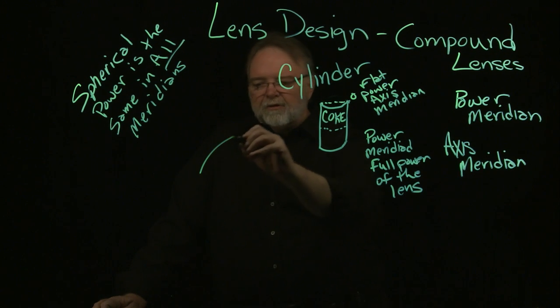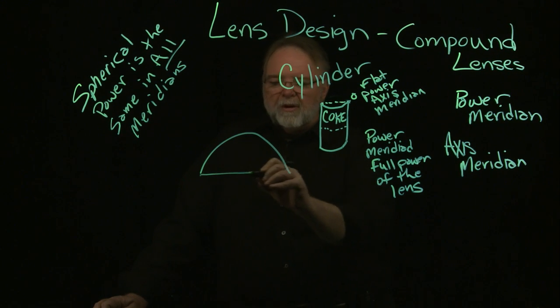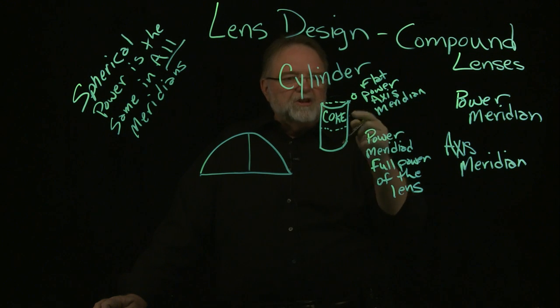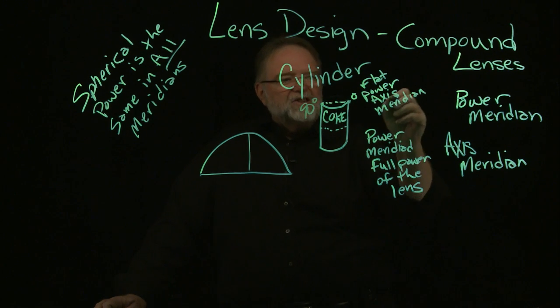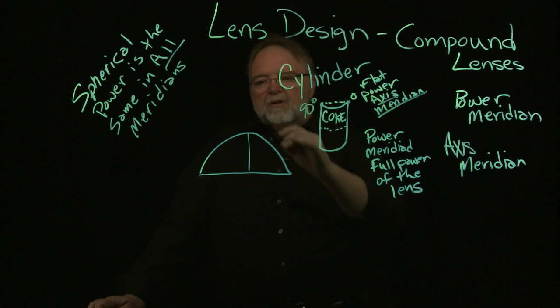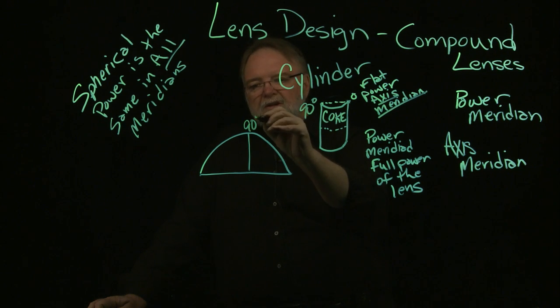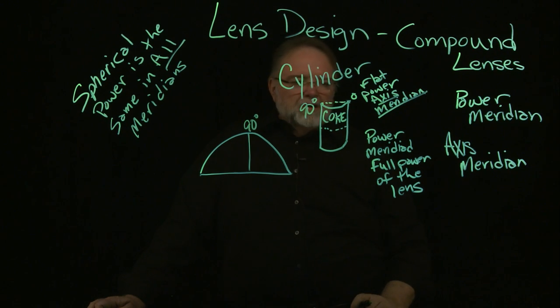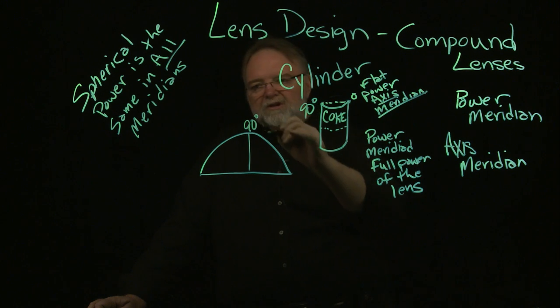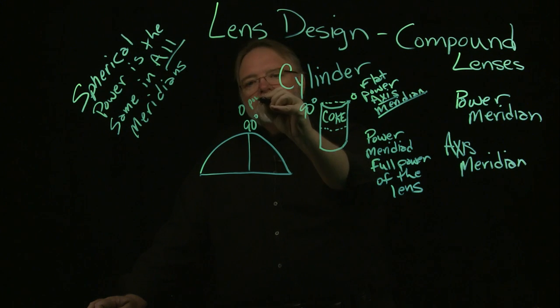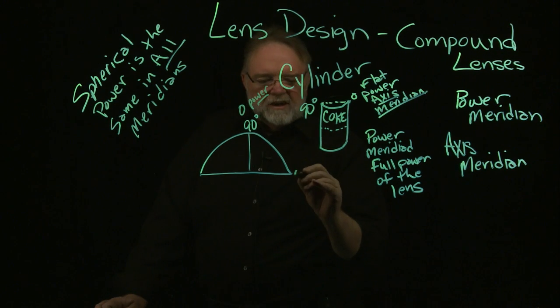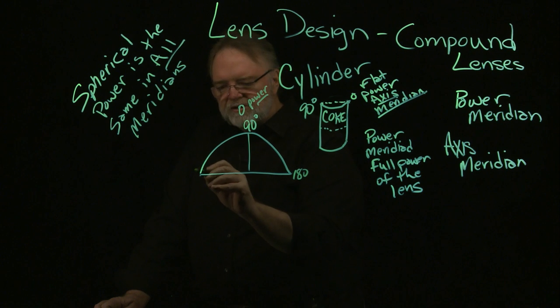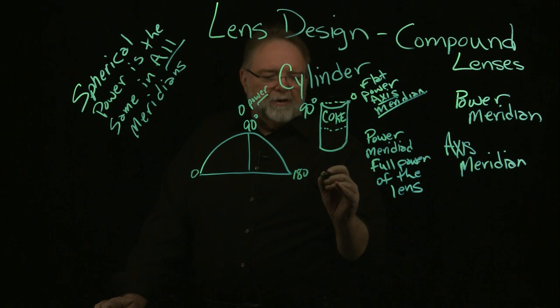So back to the protractors, we talked about meridians. Say that the axis that we're dealing with here is 90, straight up and down, 90 degrees. We don't have any power, zero power. In 180, which is also the zero, we have the full power.